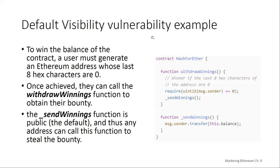Here's an example of a basic contract that illustrates this vulnerability. To win the amount of money in the contract, a user has to generate an Ethereum address whose last eight hex characters are zero — it's kind of like having a winning lottery ticket. Once you've created that address, you can call the withdrawWinnings function to obtain the money. The contract is called HashForEther.